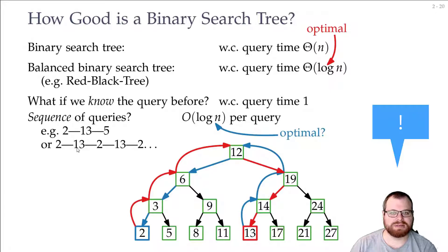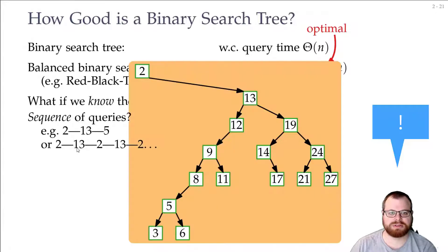Well again, if we know the sequence of queries, then we can build a tree that is better suited for this. So if we know we want to query only 2, 13, 2, 13, and so on, we just put them at the top, and now we can do each of them in constant time.